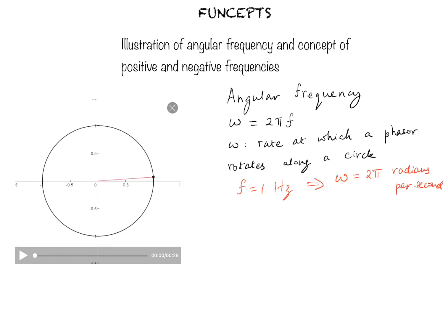And if the frequency is 2 hertz, that would mean the phasor has completed two complete rotations around the circle in one second, so it has covered 4 pi radians per second.